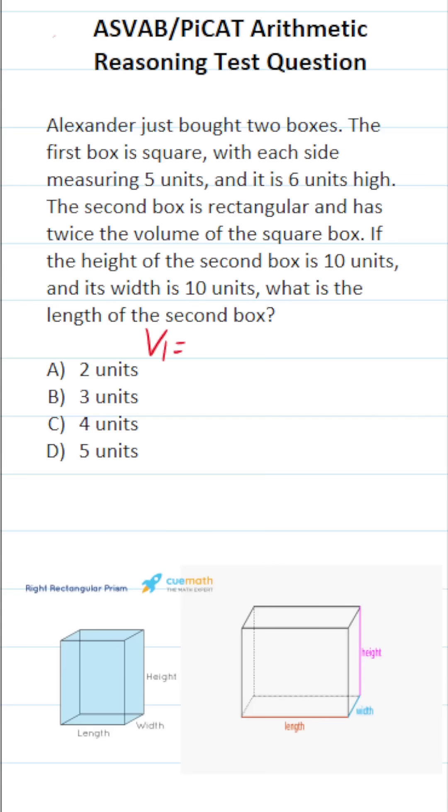So the volume of the first box is going to be length times width times height. I'm going to call that V1. The volume of the second box, which I'm going to call V2, is length times width times height.